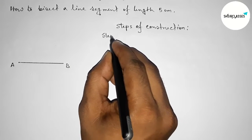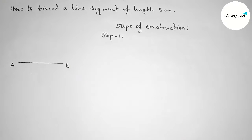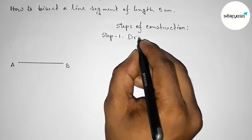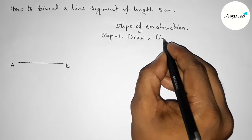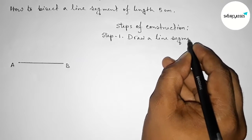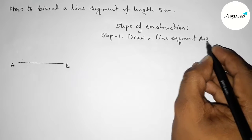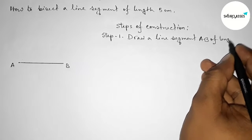Now taking here point A and here B, so AB equals to 5 centimeters. Step number one: first we have to draw a line segment AB of length 5 centimeters by using a scale.